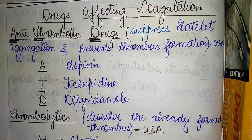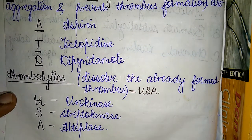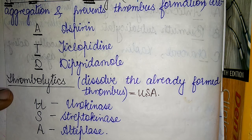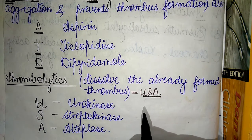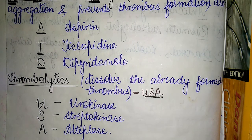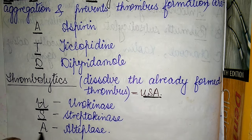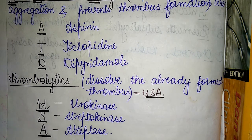The next class of compounds are the thrombolytics — drugs which help in dissolving already formed clots. The mnemonic for thrombolytics is USA: U stands for urokinase, S stands for streptokinase, and A stands for alteplase.